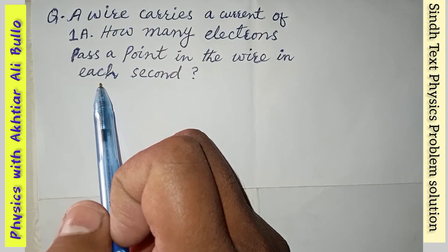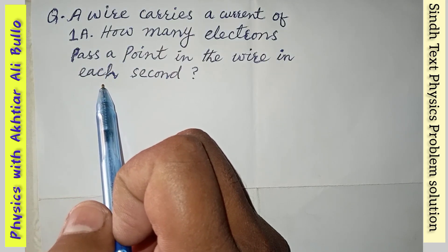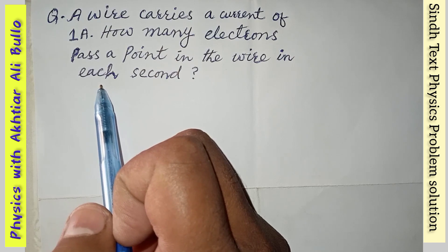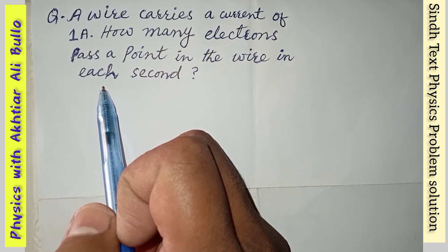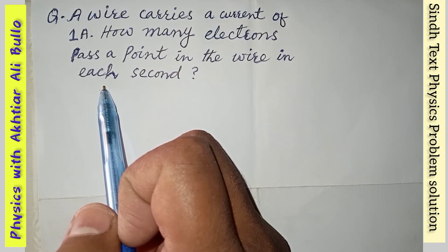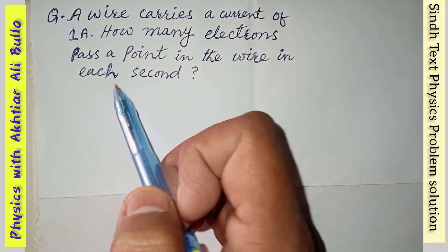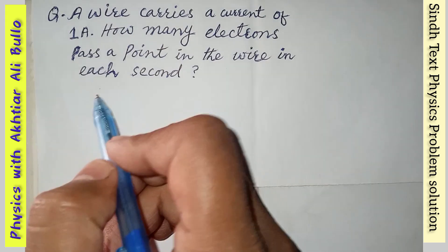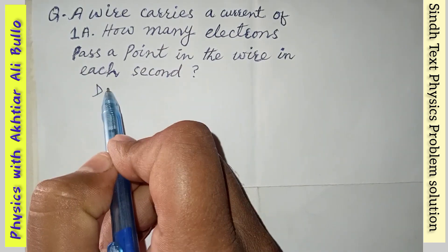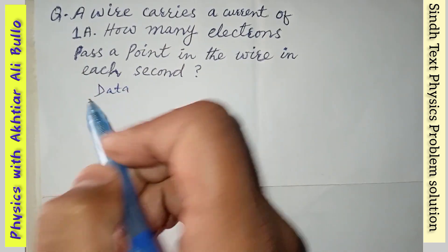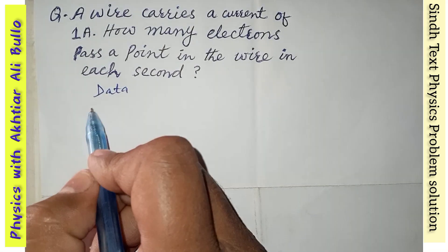The question is: A wire carries a current of one ampere. How many electrons pass a point in the wire in each second? First of all, we will form the data. The current I is equal to 1 ampere.